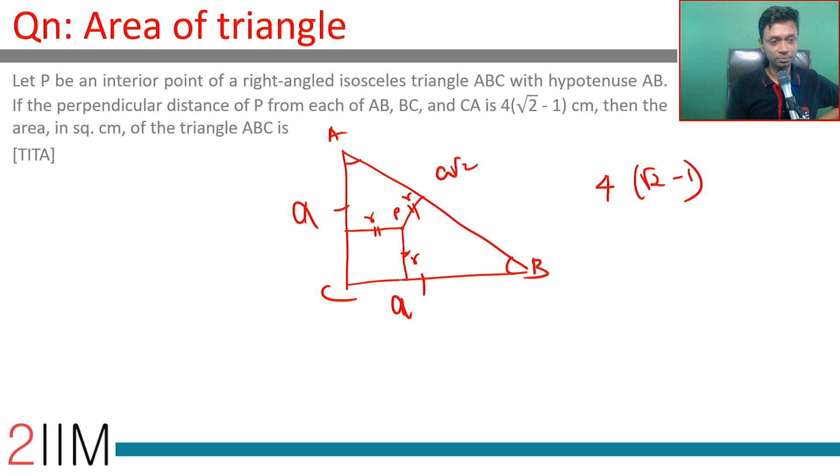In any right triangle with sides a, b, and h, the inradius is (a + b - h)/2. For a right isosceles triangle with sides a, a, a√2, this becomes (a + a - a√2)/2, which equals a(2 - √2)/2.